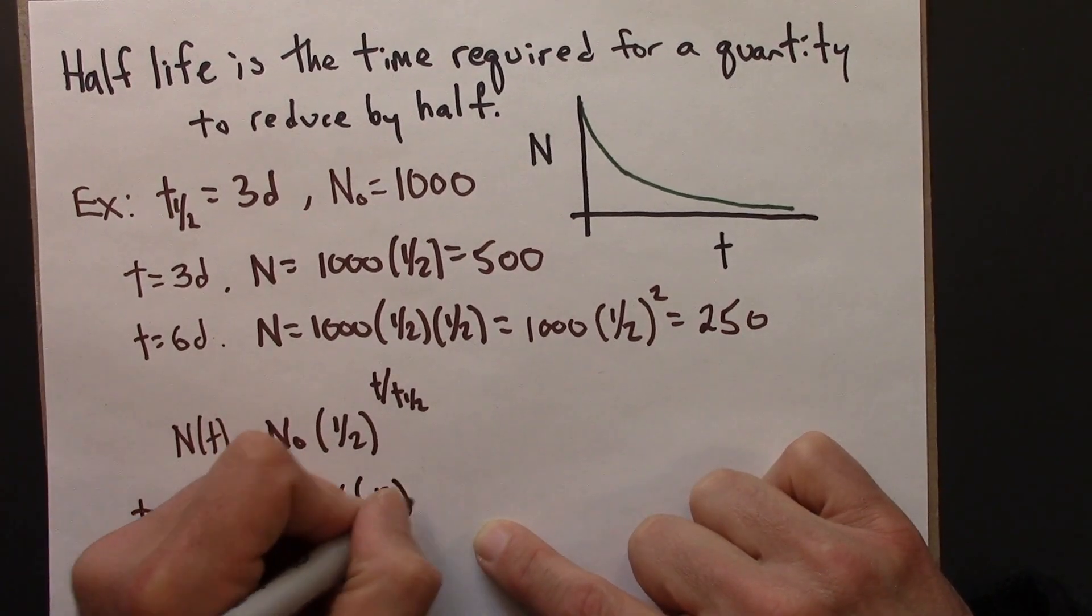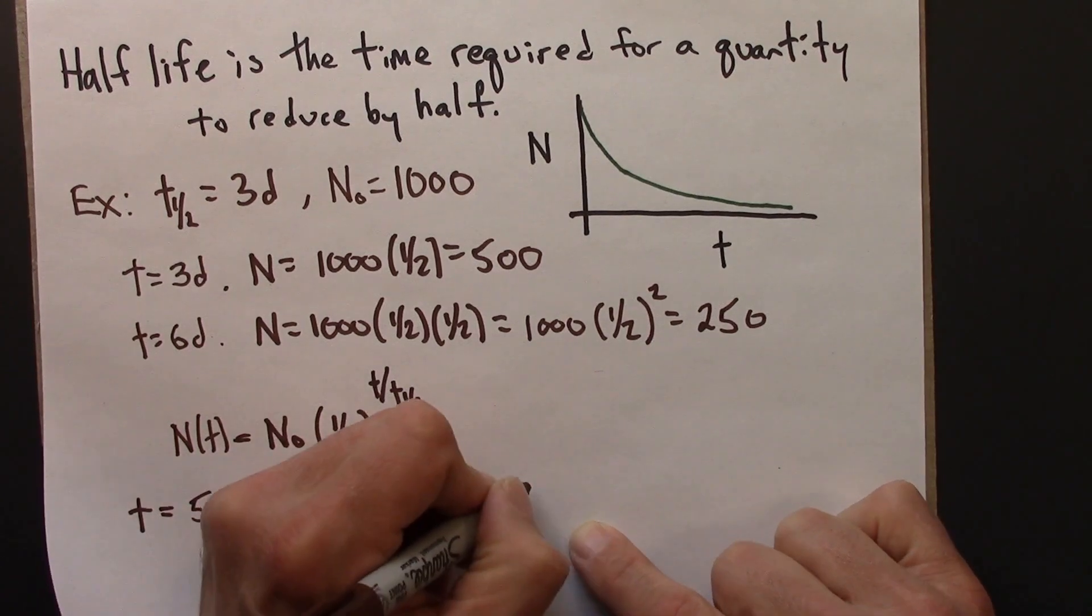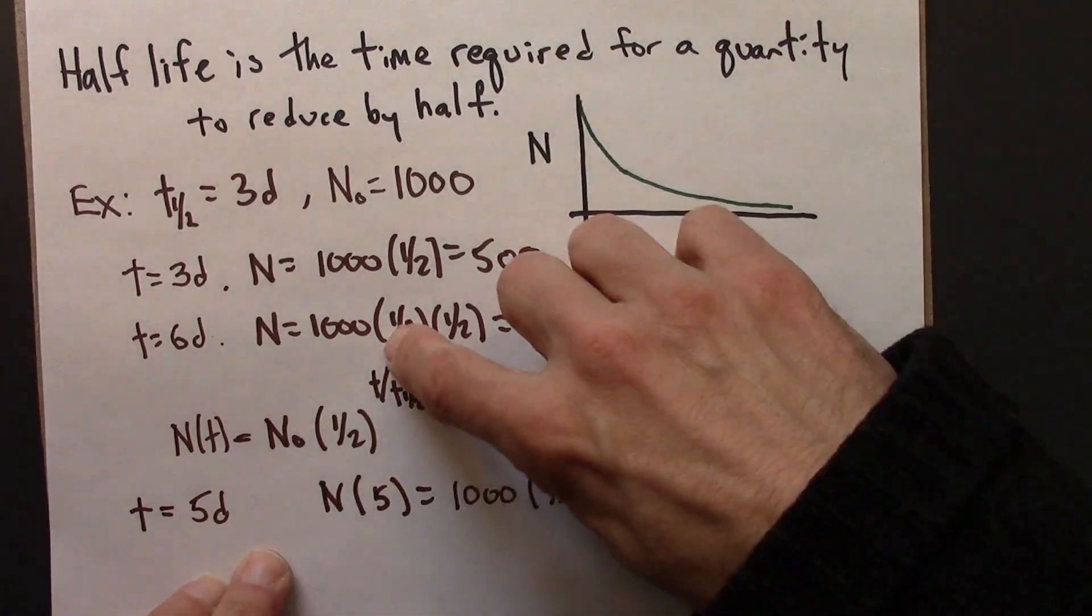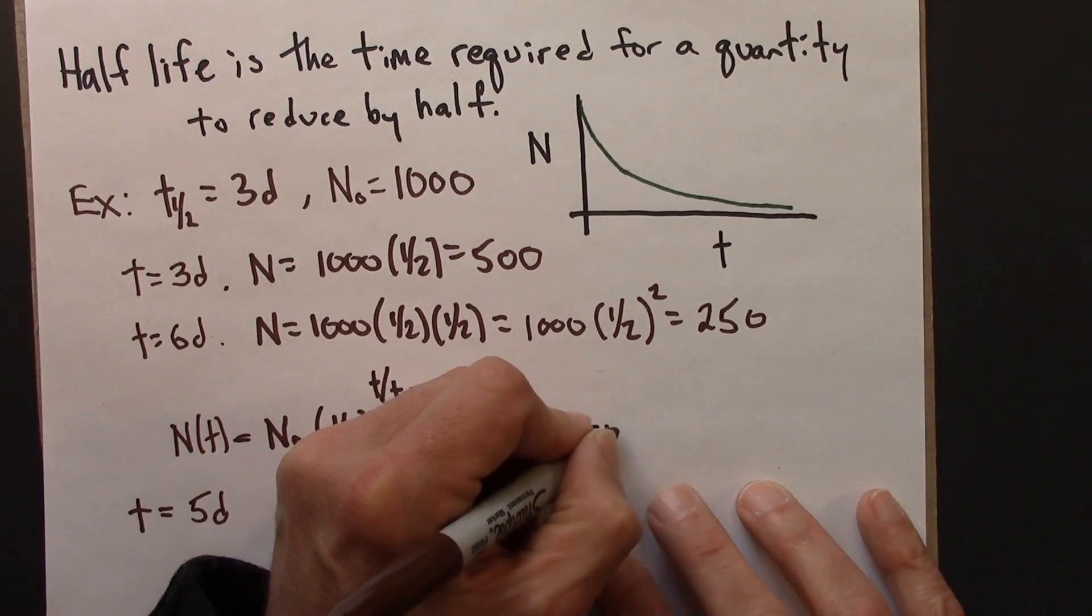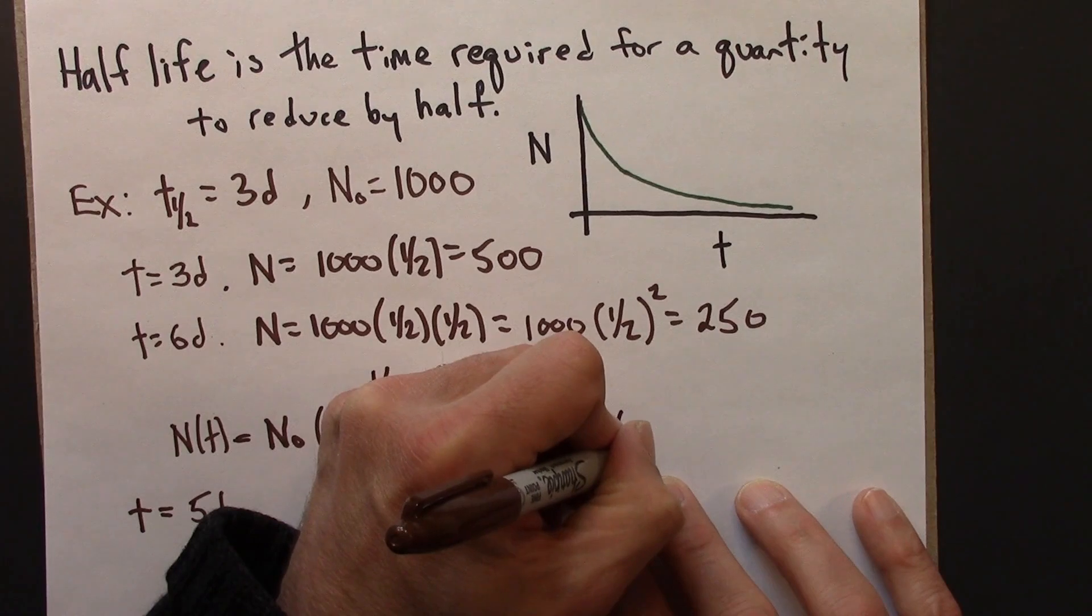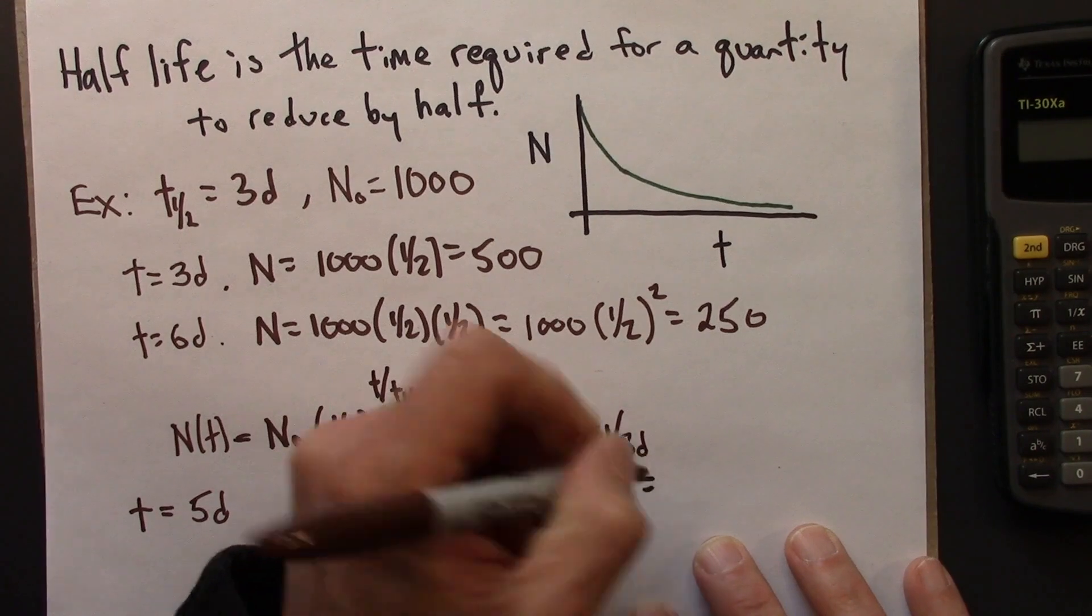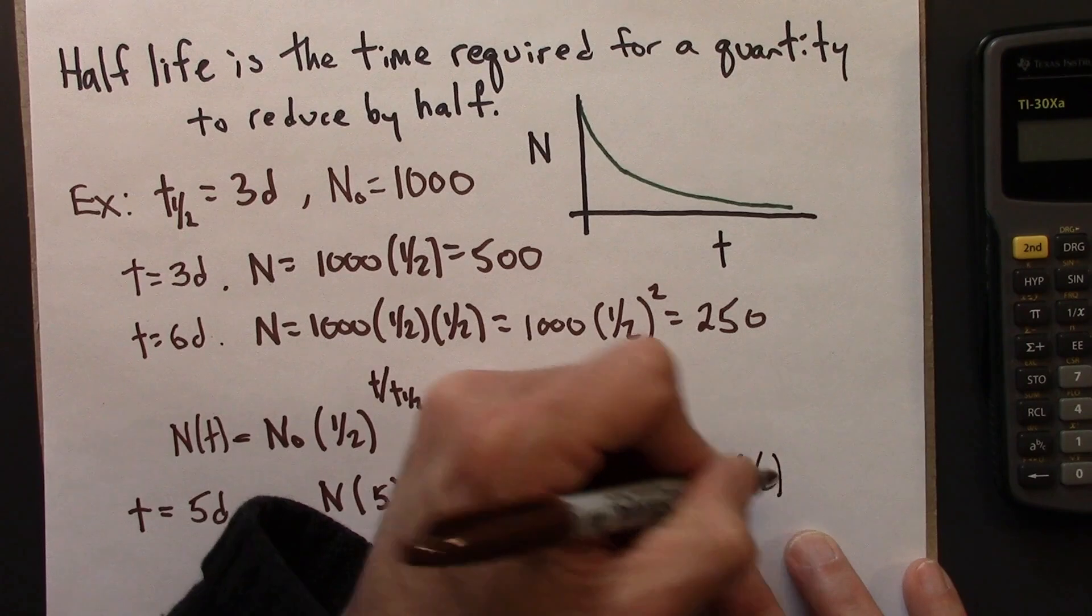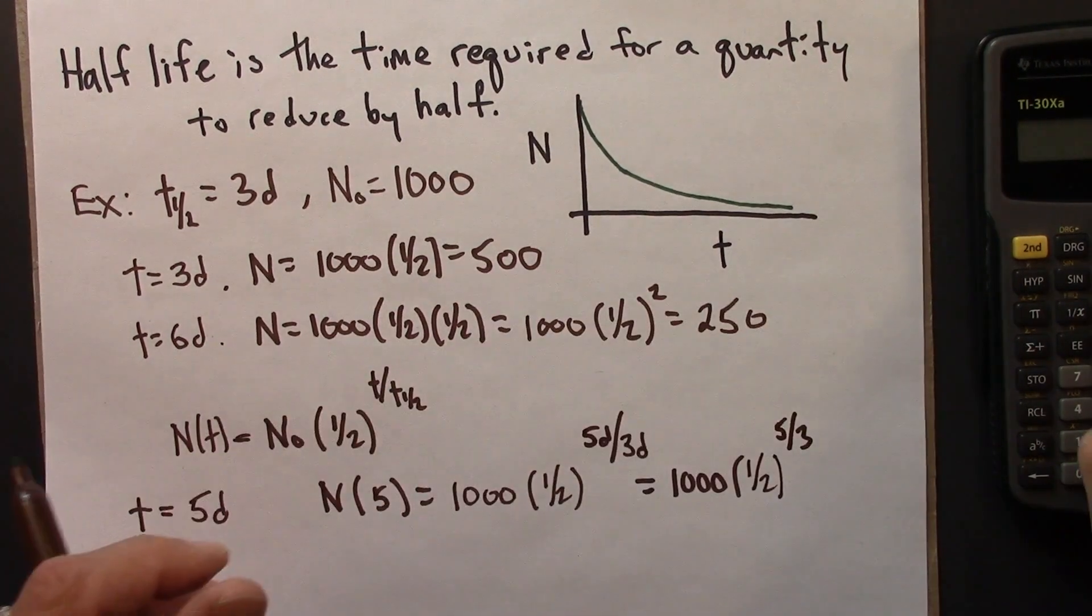N(5) is N_0, that's a thousand, times a half, then t over the half-life. t is 5, and the half-life is 3. So this would be a thousand times a half to the 5 thirds power.